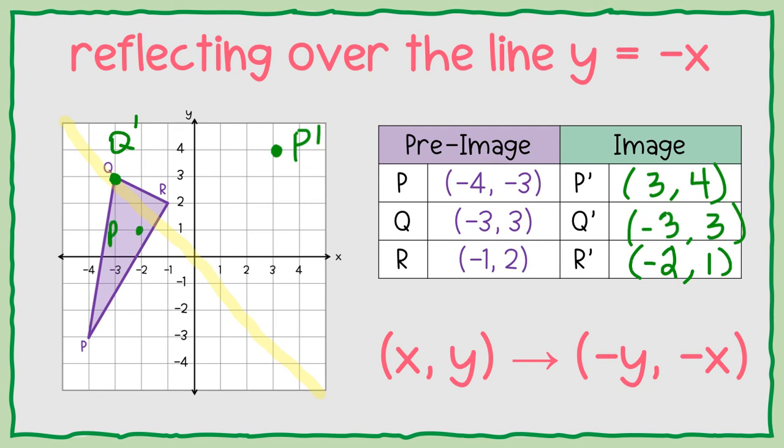So r prime. Then let's connect their dots. And that is triangle PQR reflected over the diagonal y equals negative x.